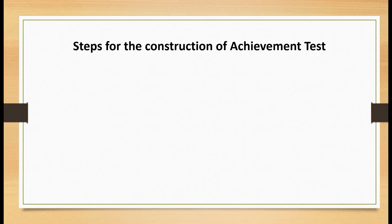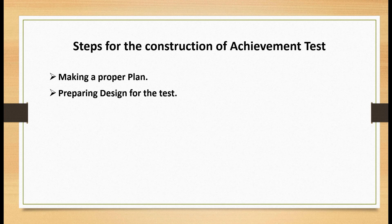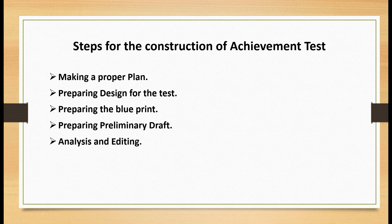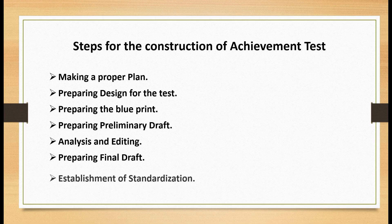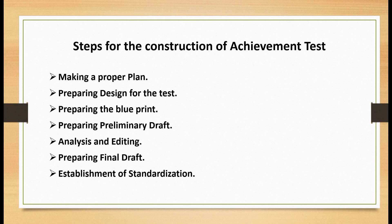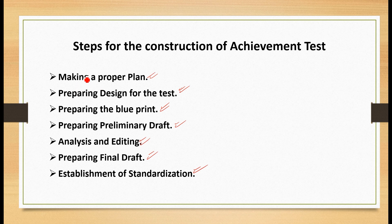Having understood the types of achievement tests, we now move to understand the steps for the construction of an achievement test. The seven steps are: making a proper plan, preparing a design for the test, preparing the blueprint, preparing a preliminary draft, analysis and editing, preparing the final draft, and checking for the establishment of standardization. I have only pointed out the seven steps; next we will understand each one of these in detail.